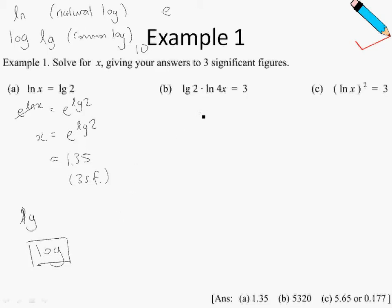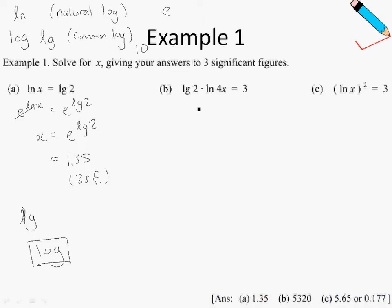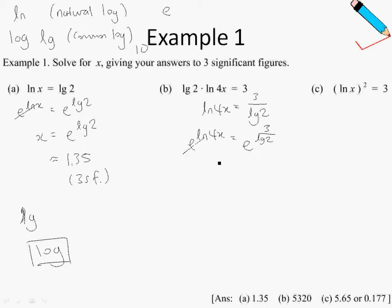In example 1b, the first thing I do is divide both sides by log 2, giving ln 4x = 3 / log 2. Next, to get rid of ln, we take exponential on both sides: e^(ln 4x) = e^(3 / log 2). Exponential and ln cancel, giving 4x = e^(3 / log 2). Finally, x = (1/4) × e^(3 / log 2).